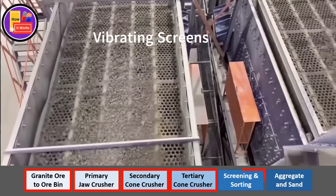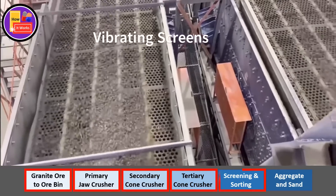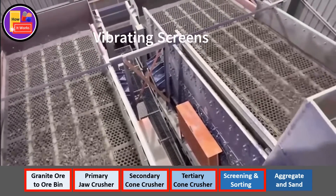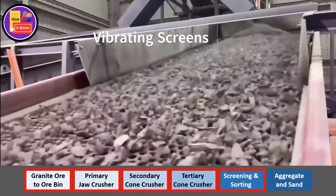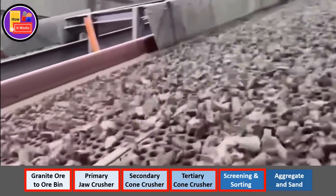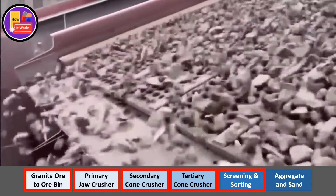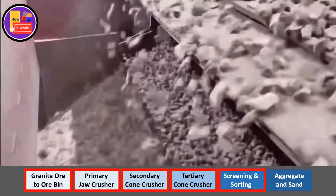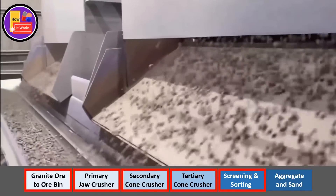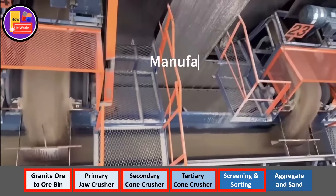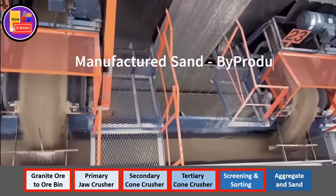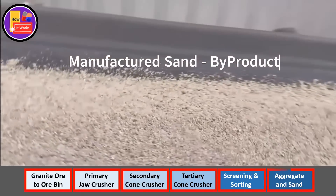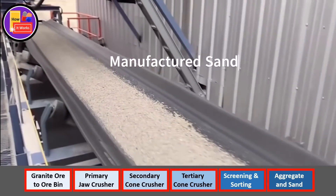Again, sand and the smaller size aggregate generated in the process will be screened and sorted out. Finally, the tiny particles and powder will be screened from the aggregate and will be used as manufactured sand.